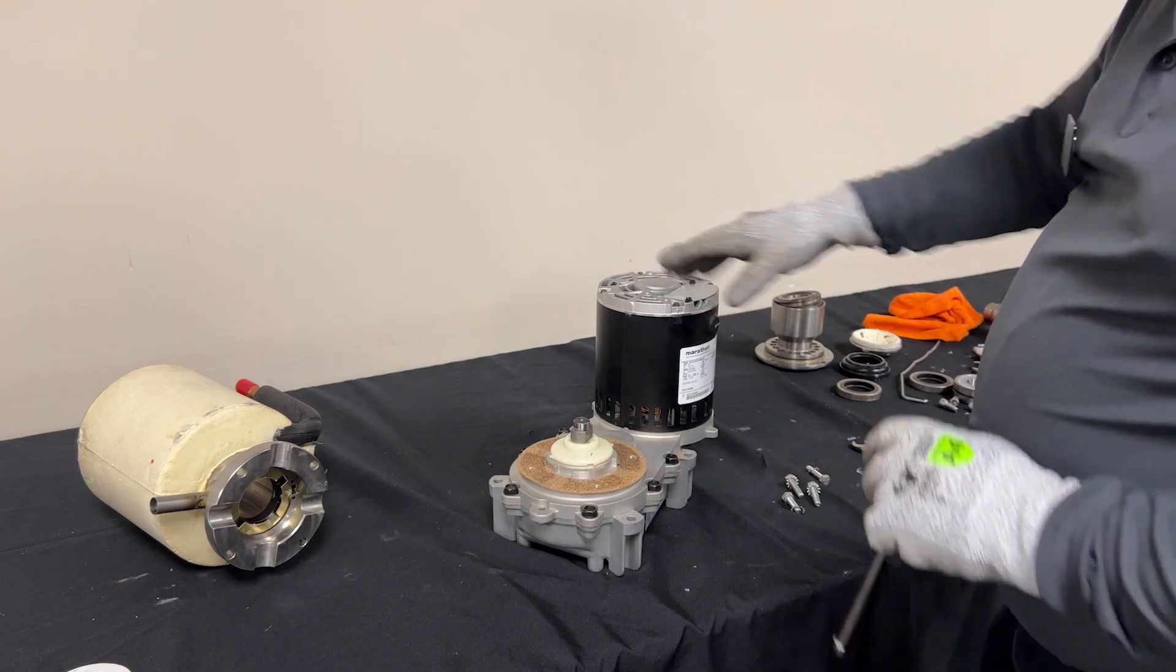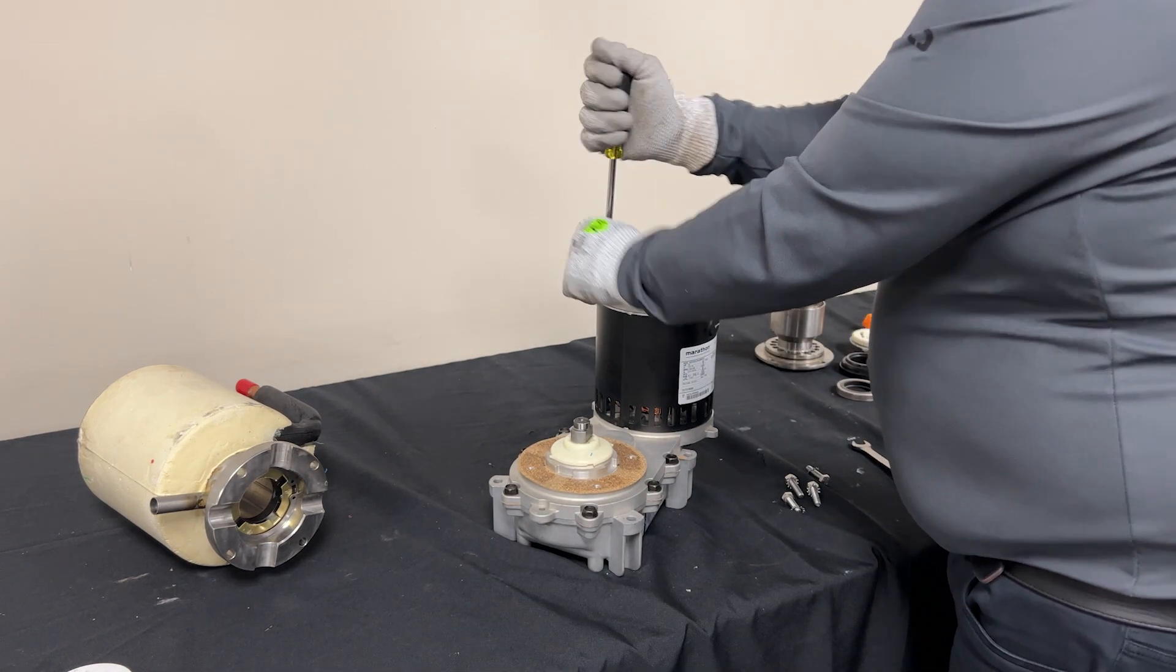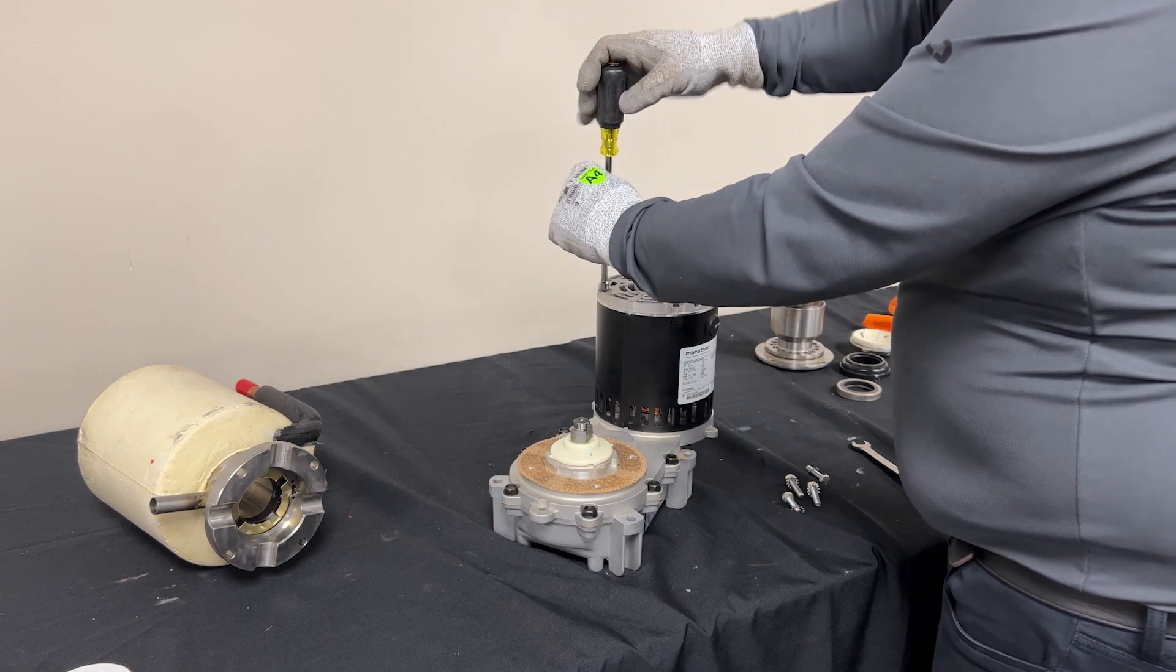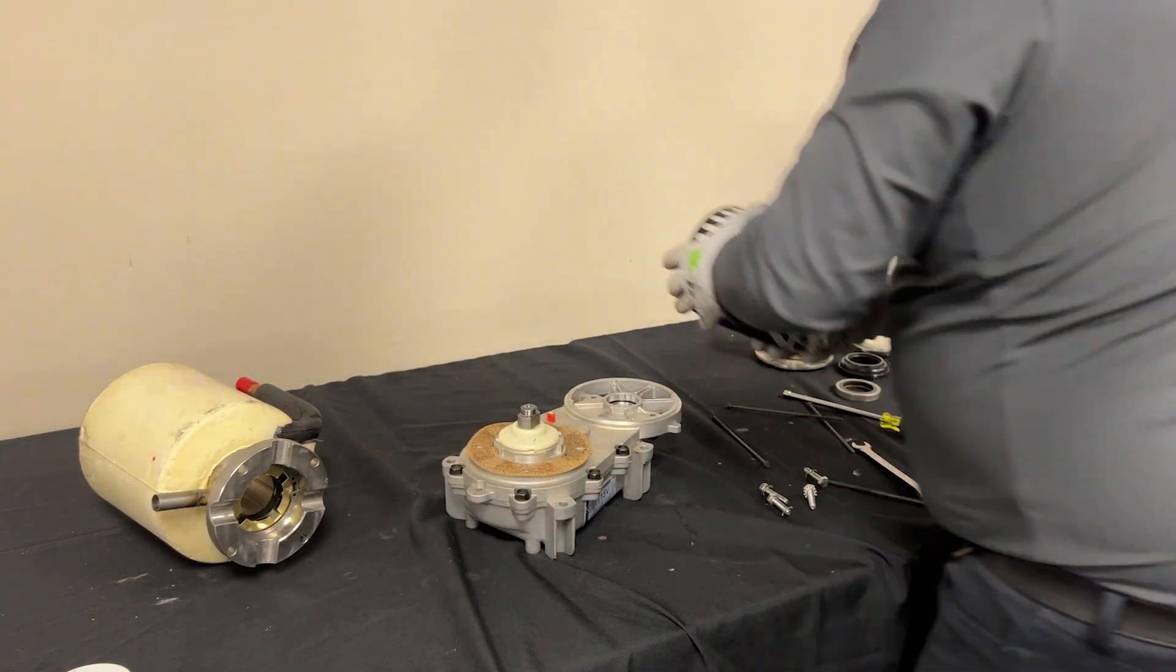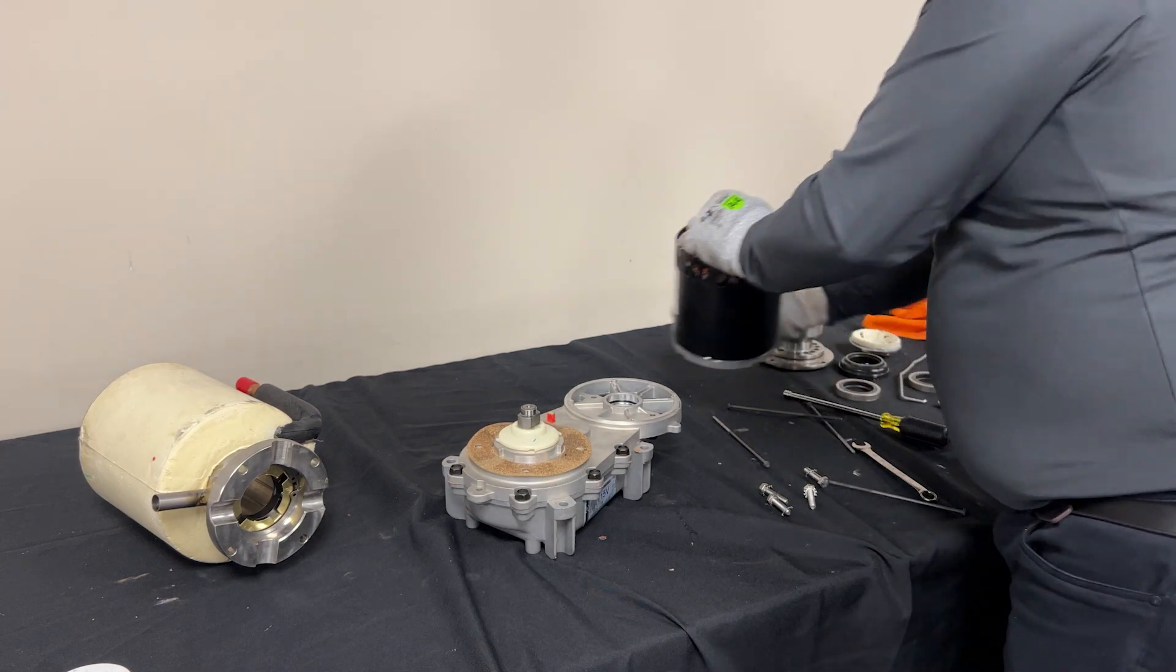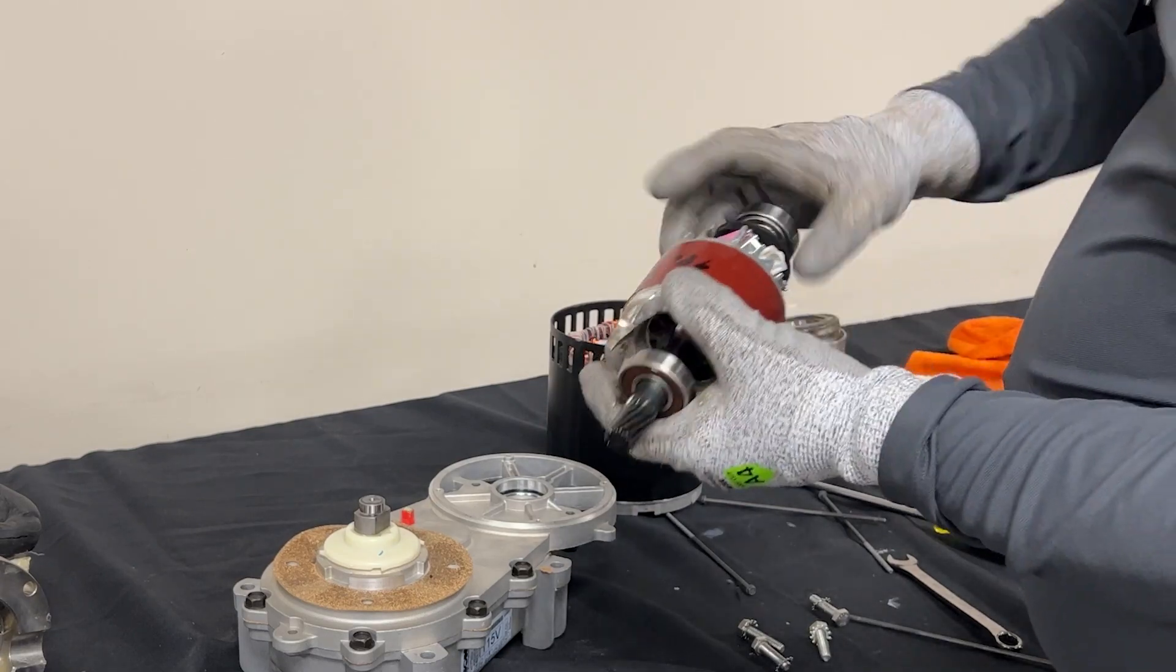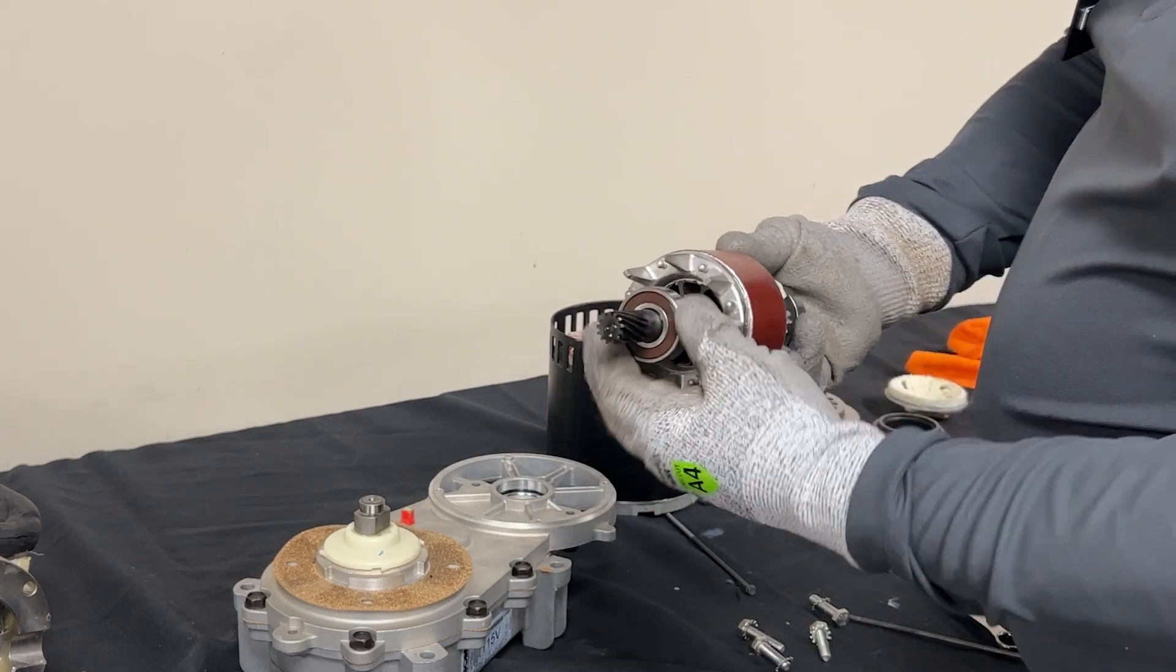Now we need to remove the gear motors. To be able to do that, we're just going to use a 1/4 inch nut driver. So here we have the stator. We're able to at the same time inspect our bearings.